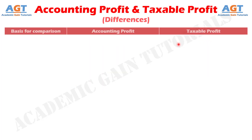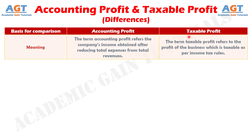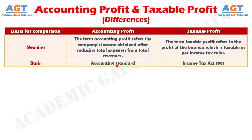Let's look into the basic differences between accounting profit and taxable profit in a tabular form. Difference number 1: the term accounting profit refers to the company's income obtained after reducing total expenses from total revenues. On the other hand, the term taxable profit refers to the profit of the business which is taxable as per income tax rules. The financial profit of the business is known as accounting profit, while the profit which is taxable is known as taxable profit.